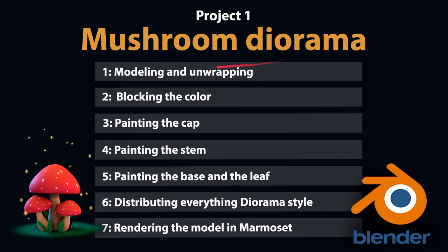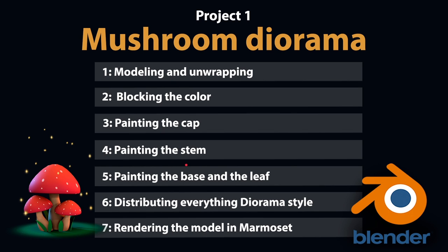The next section is the first project, which is a mushroom diorama, where we are going to cover the entire texturing process. We are going to start modeling and unwrapping the objects, which are very simple objects, and this is a very fast process. Then we are going to start blocking the colors — putting some flat colors — and continue hand painting all the color variations, painting manually all the textures and details in this model. After painting, we are going to distribute everything in a diorama style, and finally export all the maps to make the presentation in Marmoset. These maps could be used in any kind of rendering engine, not only in Marmoset.